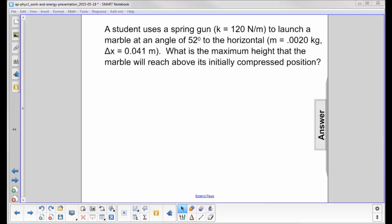A student uses a spring gun (k = 120 N/m) to launch a marble at an angle of 52 degrees to the horizontal (m = 0.020 kg, Δx = 0.041 m). What is the maximum height that the marble will reach above its initially compressed position?